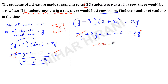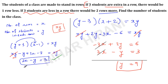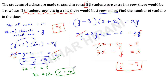Now I will solve using the elimination method. Equation 1: 3x − y = 3. Equation 2: −3x + 2y = 6. Adding both equations, 3x and −3x cancel, leaving 2y − y equals 9, so y equals 9. Substituting y = 9 into equation 1: 3x − 9 = 3, so 3x = 12, giving x = 4. So the answer is x = 4 rows and y = 9 students per row.